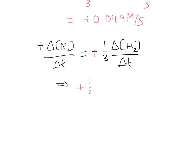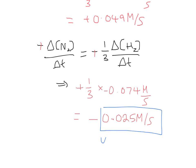So it's plus one-third times by negative 0.074 molarity per second, and that gives us a rate of minus 0.025 molarity per second. So that tells us that nitrogen is being used up at this rate here.